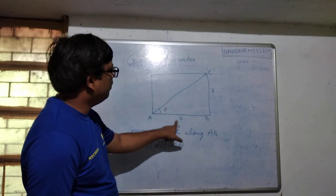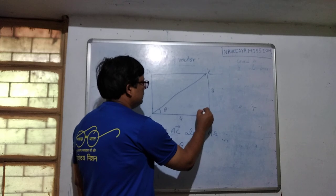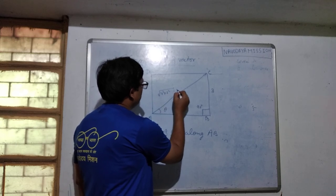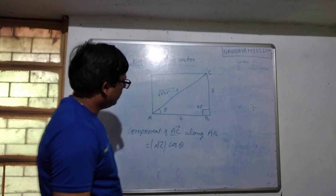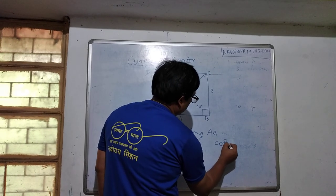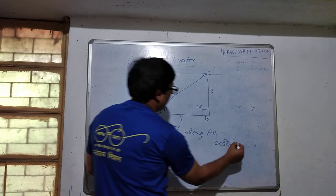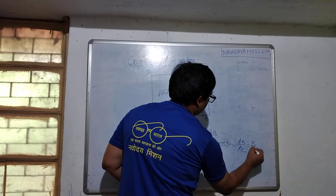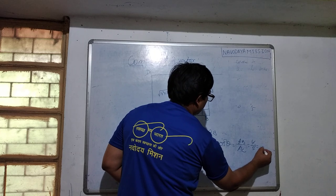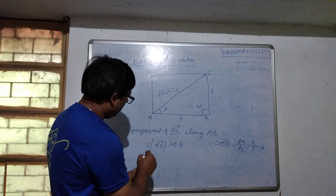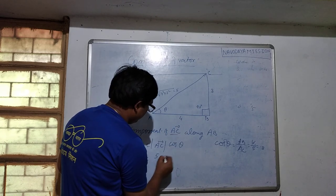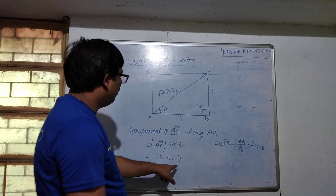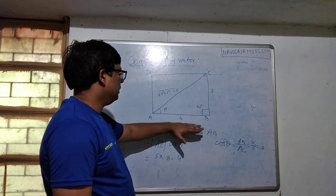What is the magnitude of AC? When AB is 4 and BC is 3, and we have said this is a rectangle, so AC = √(4² + 3²) = 5. Therefore cos theta = AB / AC = 4/5. So the component of AC along AB is AC × cos theta = 5 × (4/5) = 4.